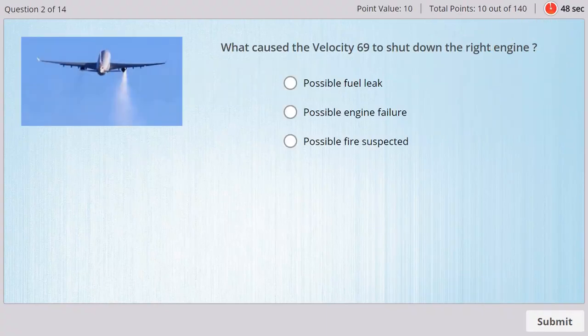Velocity 69 request to descend to flight level 220, pan pan pan pan pan. Due to possible fuel leak, we will be shutting down the right engine and expecting a return to Melbourne. TOB is 113. No data is good. Velocity 69 Roger pan. Descend flight level 250. Flight level 250. Velocity 69.